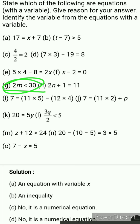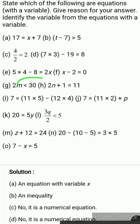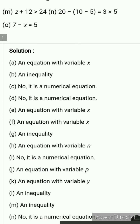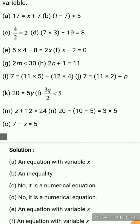Next is 2m is less than 30. Again, this is not an equation — it is an inequality. That is why it is not an equation.